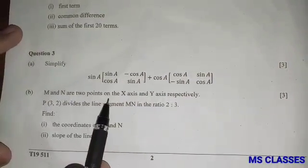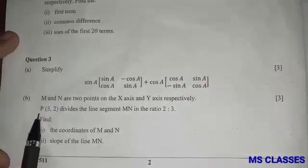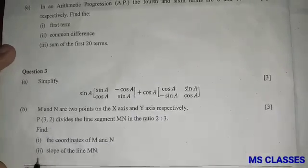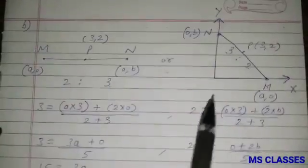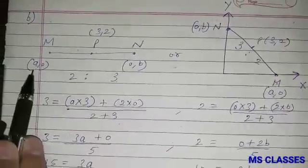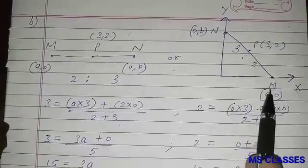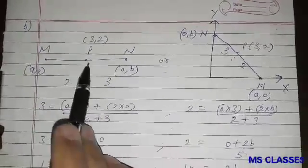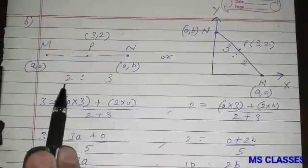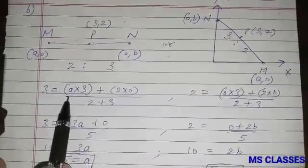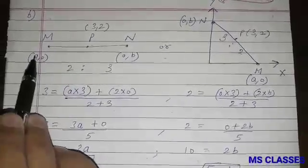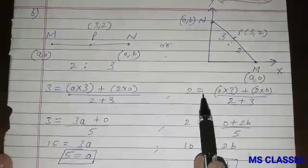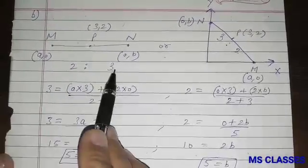M and N are two points on the x-axis and y-axis respectively. P divides line segment MN in the ratio 2:3. Find the coordinates of M and N and the slope of line MN. M lies on the x-axis so assume M = (a, 0), and N lies on the y-axis so N = (0, b). Using the section formula: 3 = (a × 3 + 2 × 0) / (2 + 3) and 2 = (0 × 3 + 2 × b) / (2 + 3).